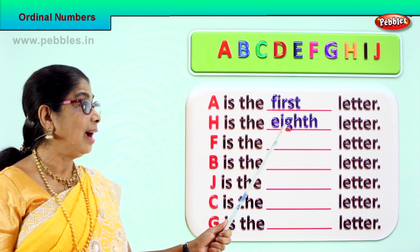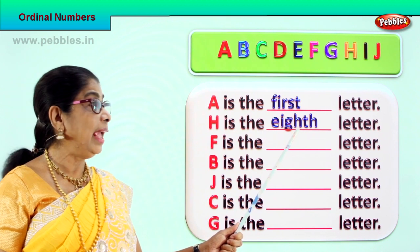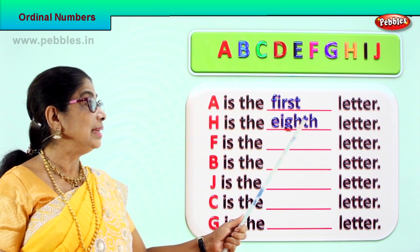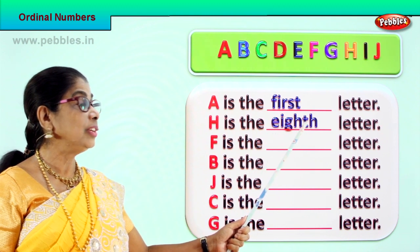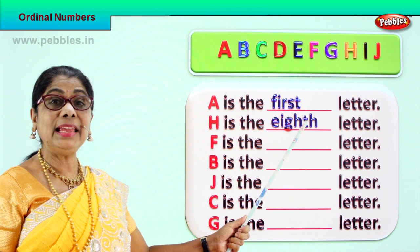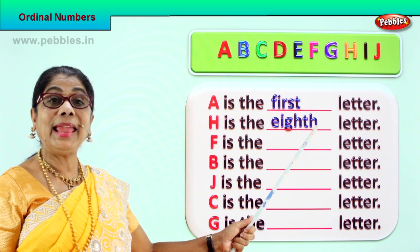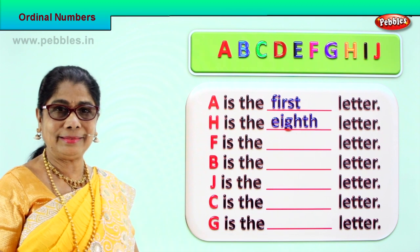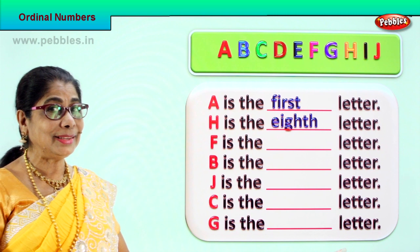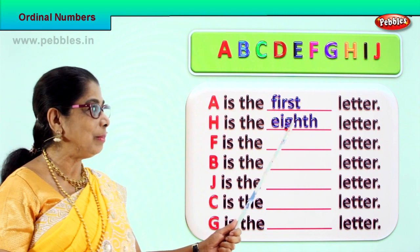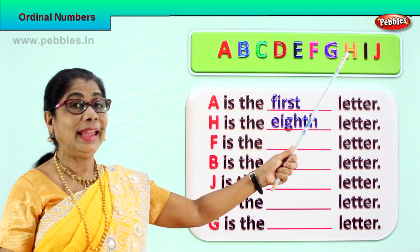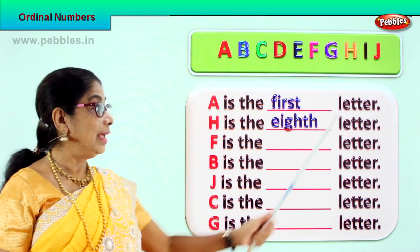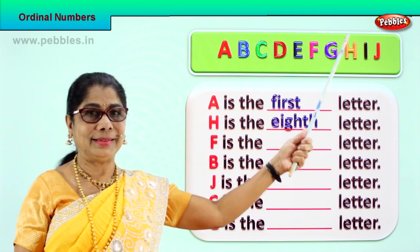Spell with me: E, I, G, H, T, H. Eighth. E, I, G, H, T, H — eighth. While we do exercise, you must remember the spelling. So according to the place, H is the eighth letter.